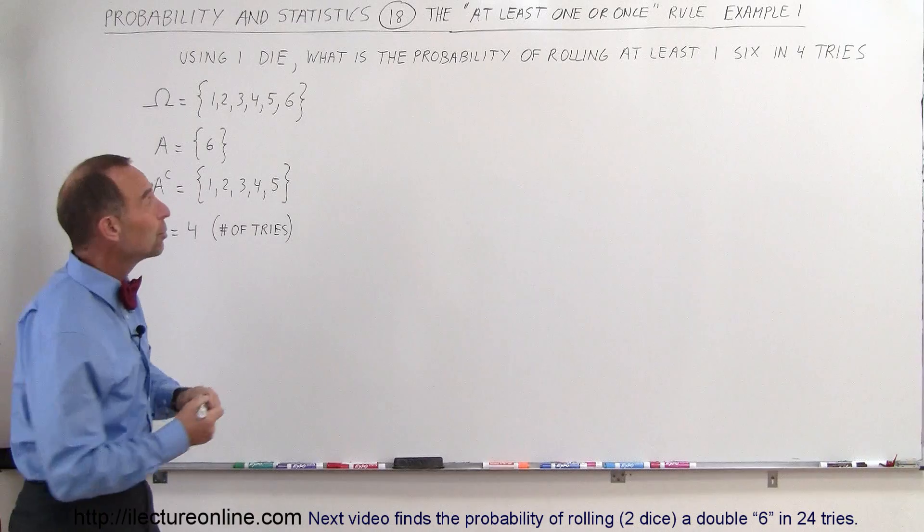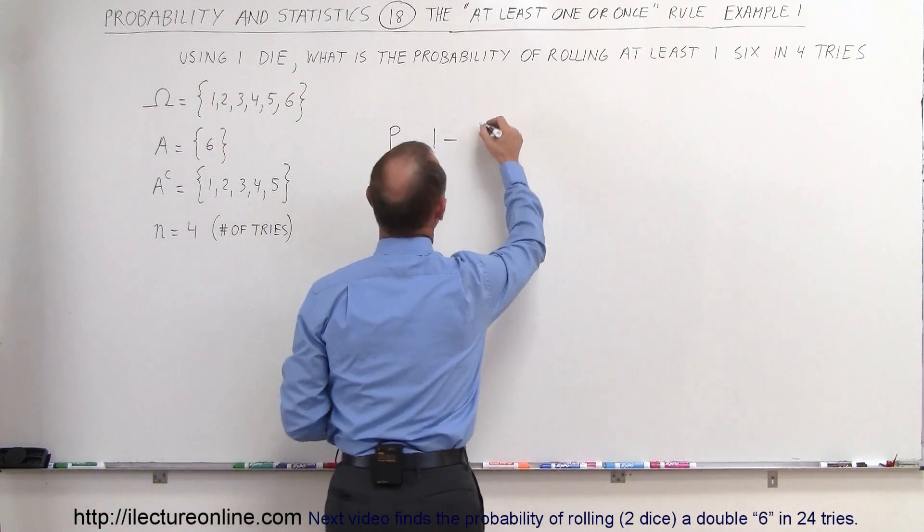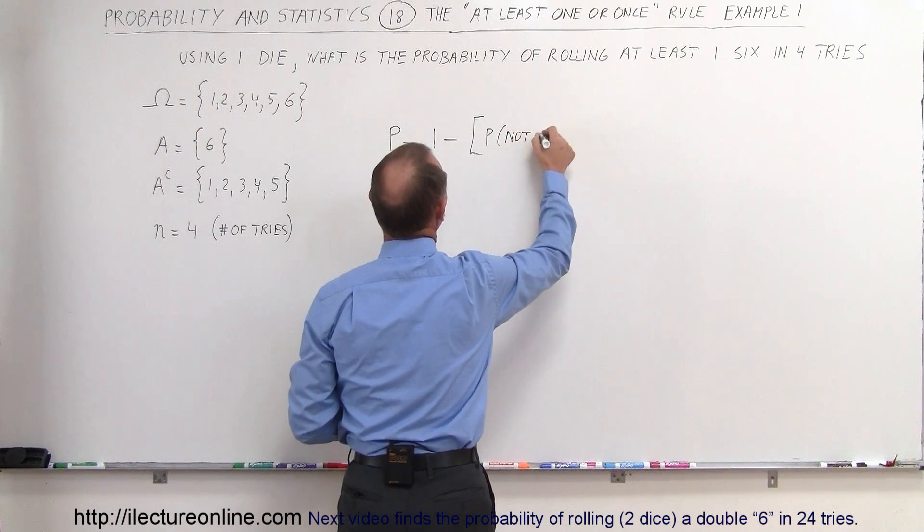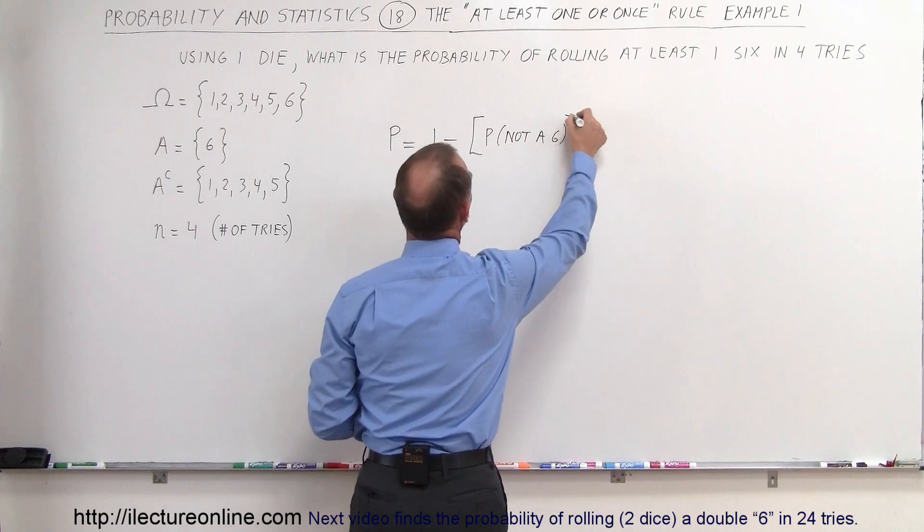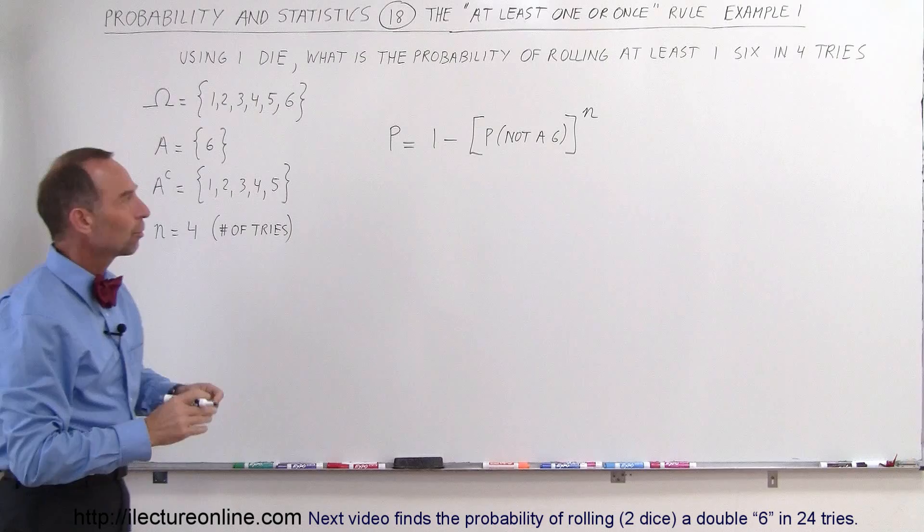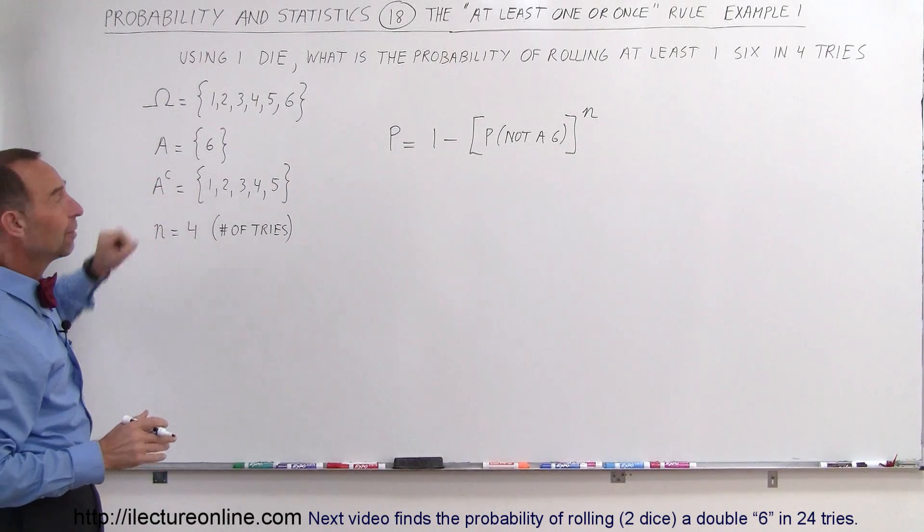The equation we use is: the probability equals one minus the probability of not getting a six, raised to the nth power for that number of tries. The probability of not a six is the complement of A.